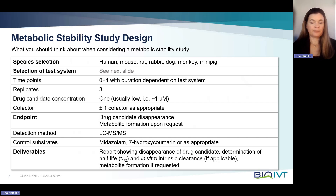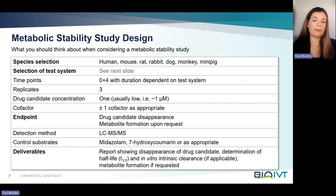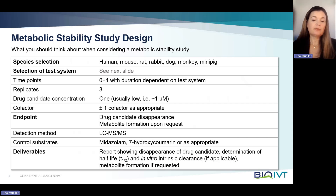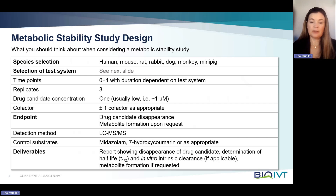First is species selection. Generally, these studies are conducted in all or a selection of the following species: human, mouse, rat, rabbit, dog, monkey, and minipig. Which species and how many depends on the program and the drug candidate. The selection of a test system also requires some thought, which I will cover in the next slide. Stability is assessed over time, so the time points need to be determined — most commonly the zero time point and then four time points typically over 60 to 100 minutes, though these can be adjusted depending on the test system and specific needs.